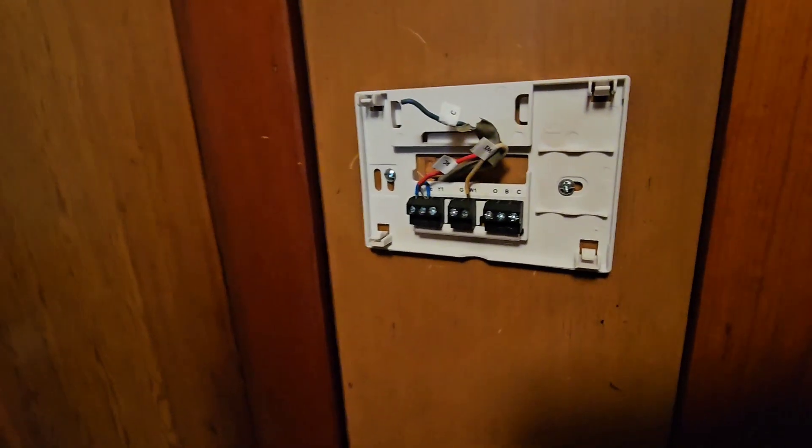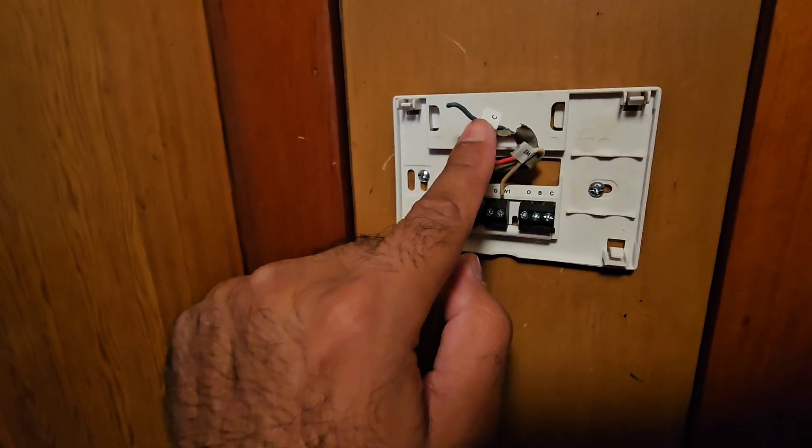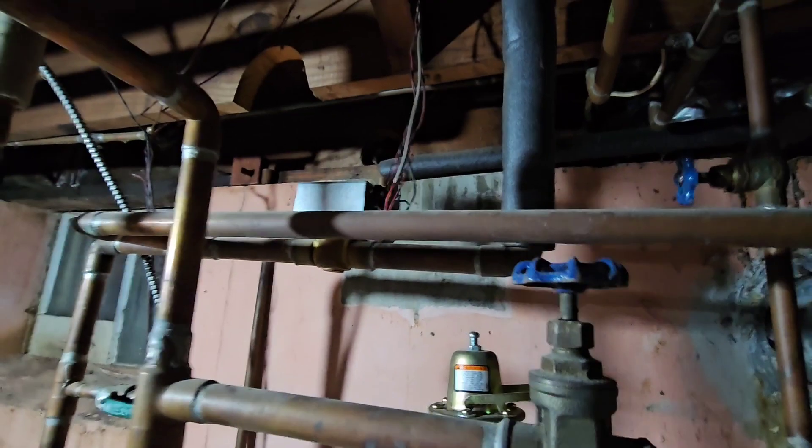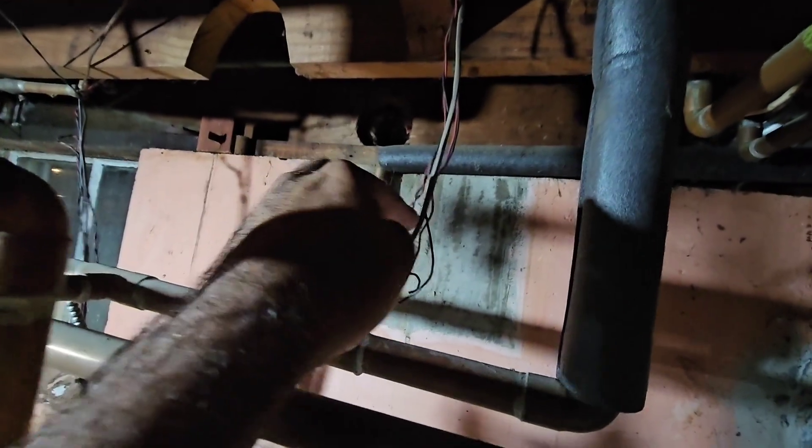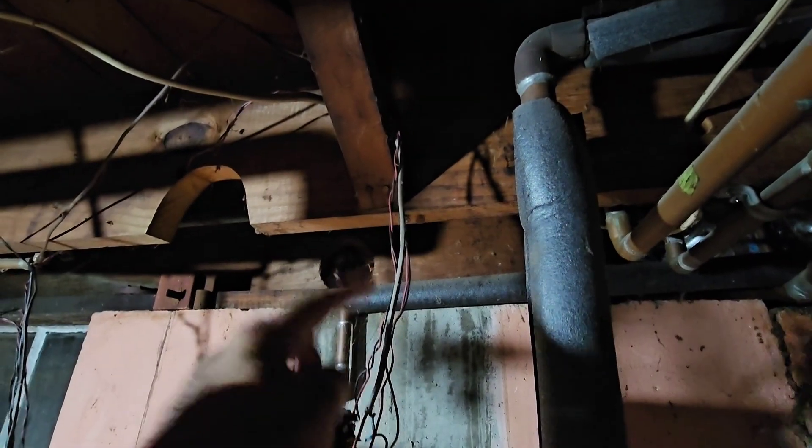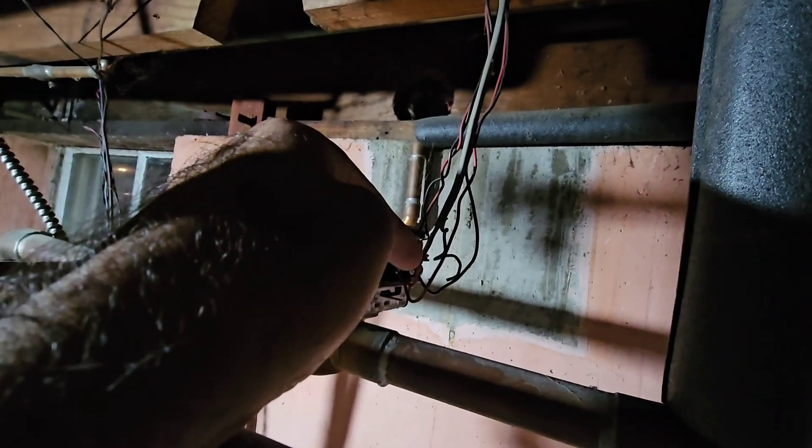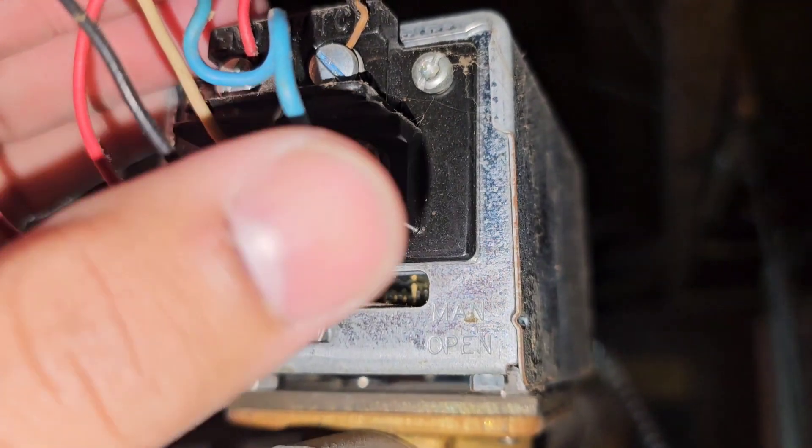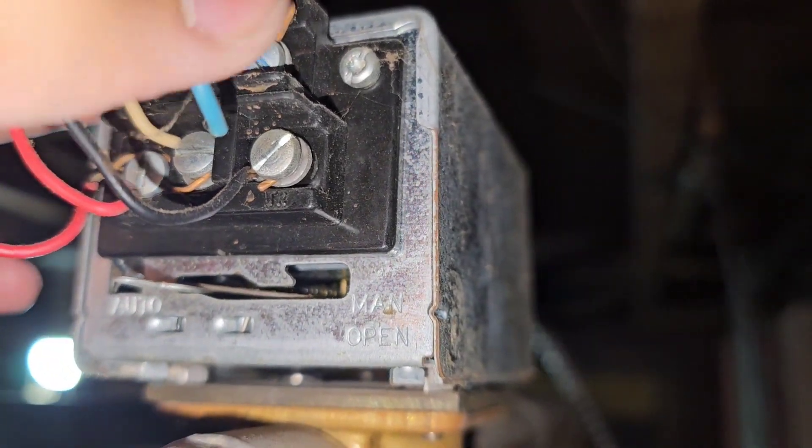Once you get them marked, you go to the furnace and figure out where the blue one goes. Let me show you what my furnace looks like. I followed the wires coming from the thermostat all the way down. Here's the red one, and you can see it says TR, so the blue one is supposed to go to the TR.